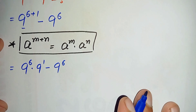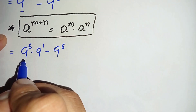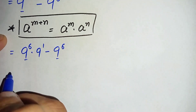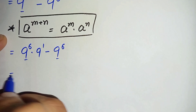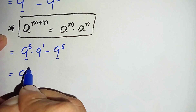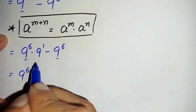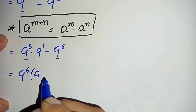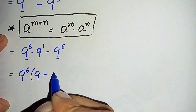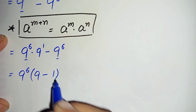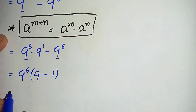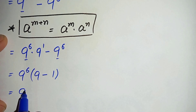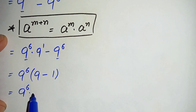Now we will take 9 raised to power 6 common from both terms. So taking 9 raised to power 6 common: 9 raised to power 1 which is simply 9 minus 1 leaves 8. So this becomes 9 raised to power 6 times 8.